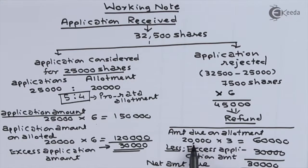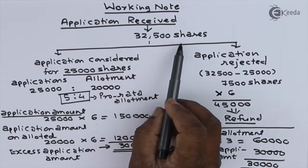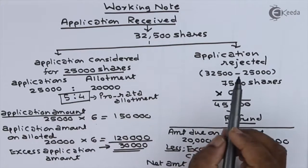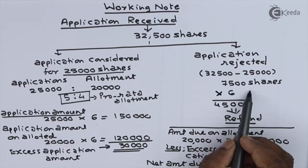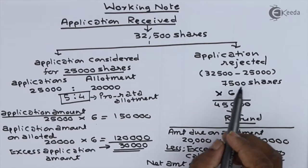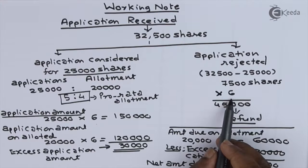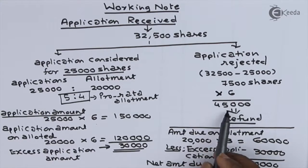At the time of allotment, ₹3 is due on 20,000 shares = ₹60,000. Excess application amount of ₹30,000 is adjusted, so the final amount due at allotment is ₹30,000. Applications for 7,500 shares (32,500 minus 25,000) were rejected, and the application money of ₹6 per share — totalling ₹45,000 — will be refunded.